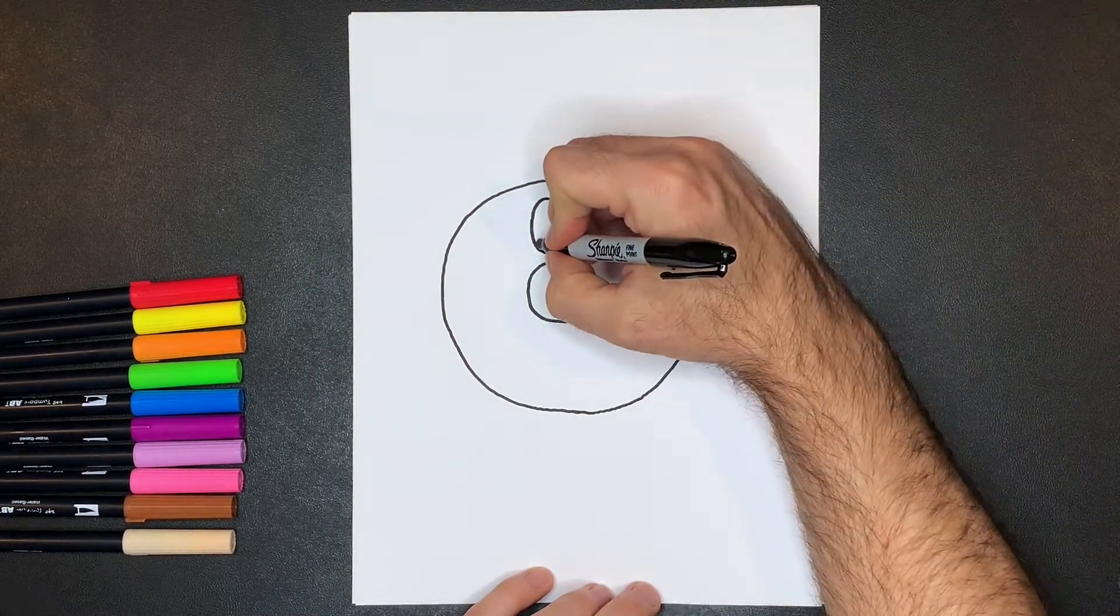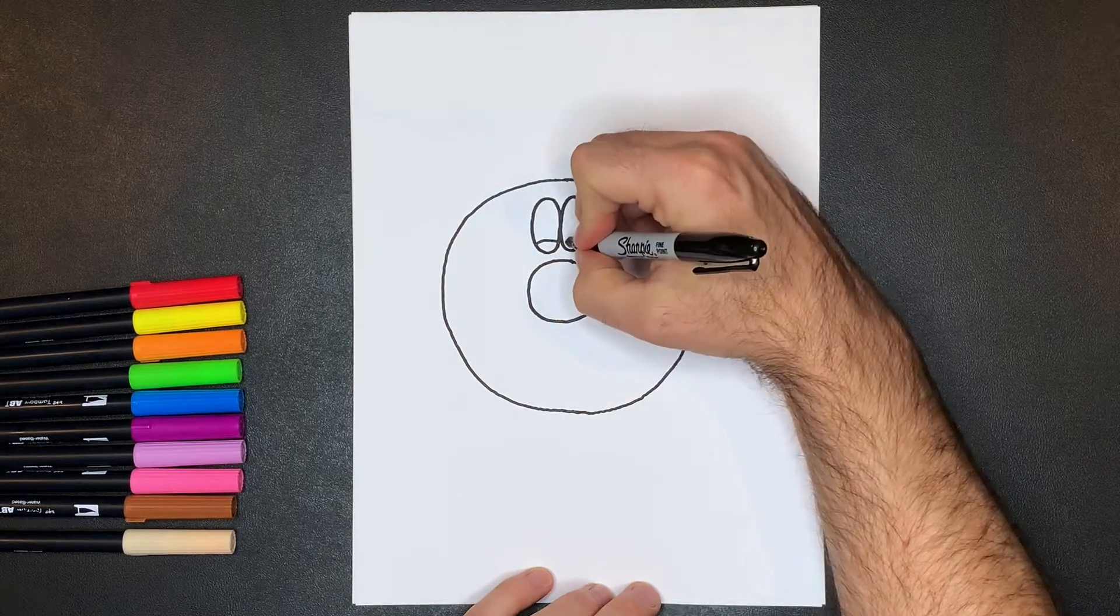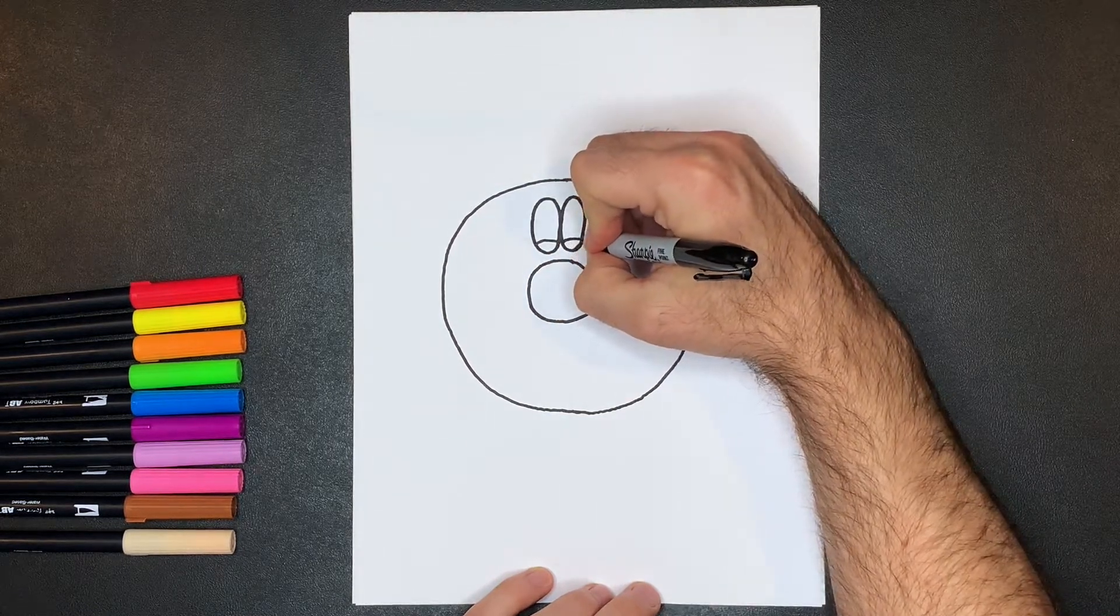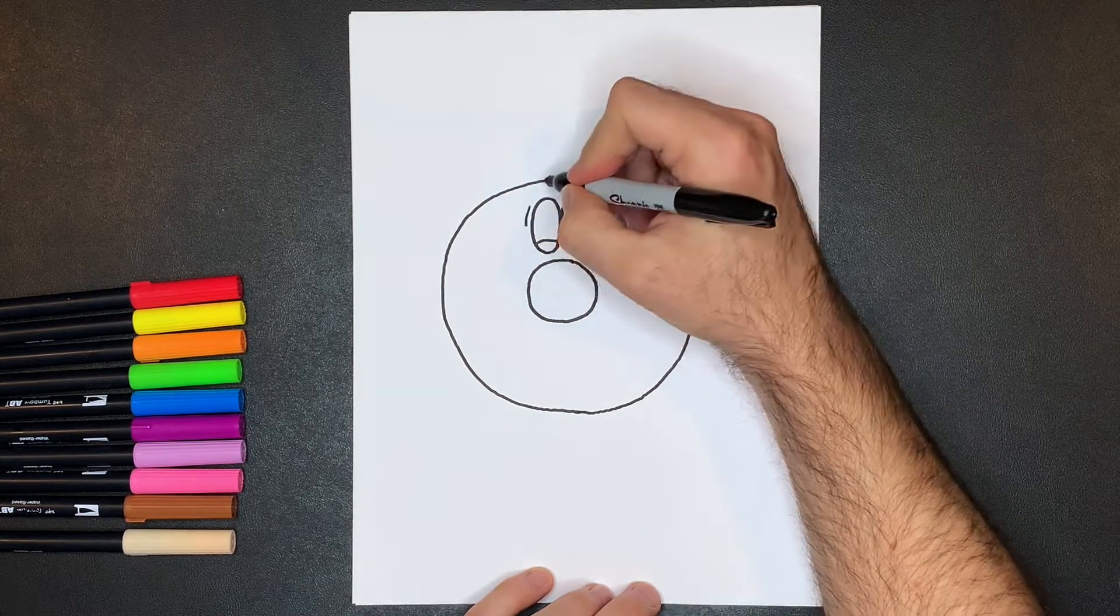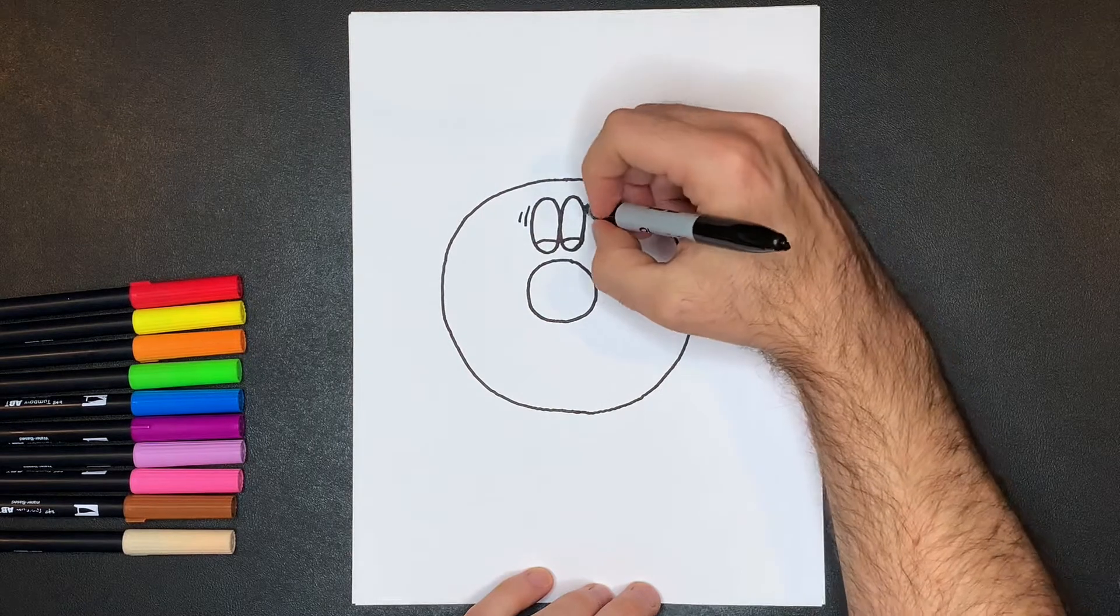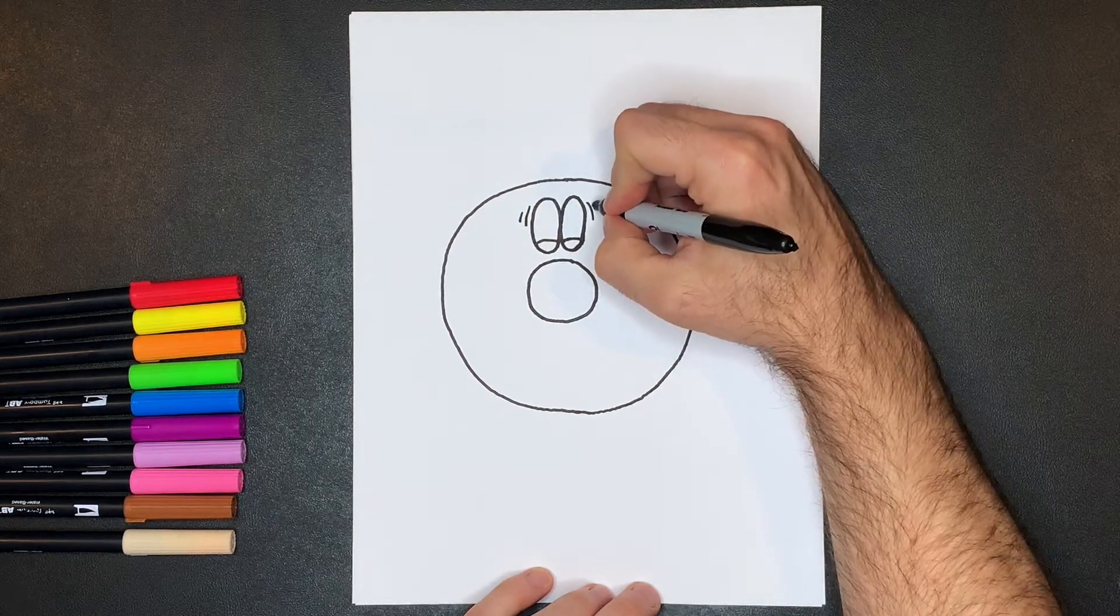Then we'll put in some eyelids, one here, one here, then we're going to add some accent lines because he's really, really scared. One right here, one right here, one right there, one right there.